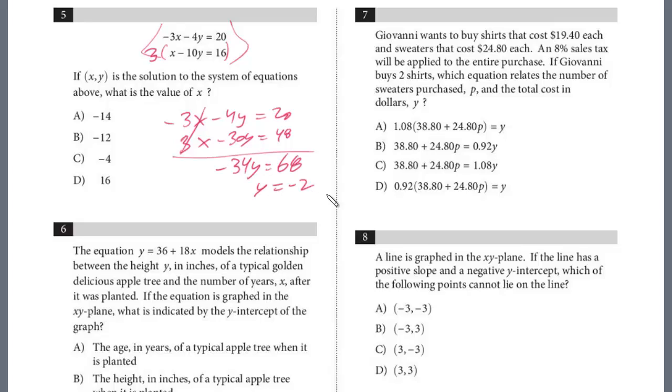So y is negative 2. But be careful, the question's not asking for y, we have to solve for x. I'm just going to take the second equation before we multiply it by 3: x minus 10y equals 16, and we're going to plug in negative 2 here. Negative 2 times negative 10 is 20, so x plus 20 equals 16. We subtract 20 and we get x equals negative 4. So the answer is C for that one.